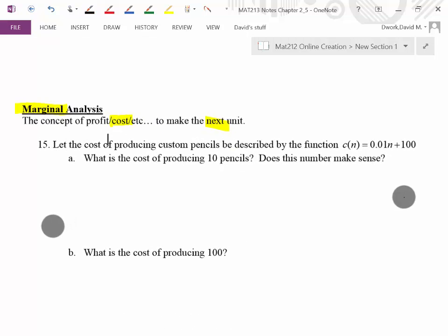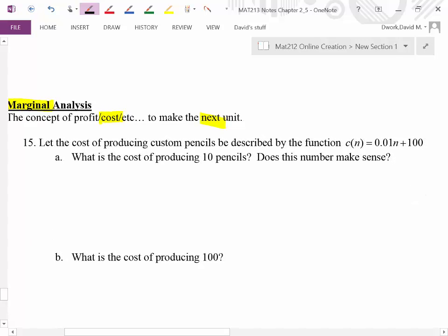So here's a silly one I did just so we can wrap our heads around it with an easy concept. Let the cost of producing custom pencils be described by the following function. If n equals 0, that means we're going to create 0 pencils, and there would be a $100 cost. So what we're saying here is there's a $100 setup cost for producing pencils. And then when you put in a number like 10, how much would it cost you to make your 10 pencils?